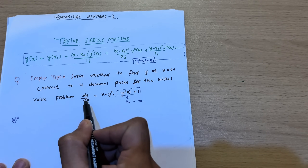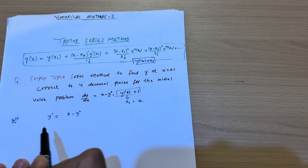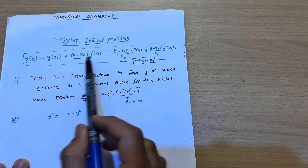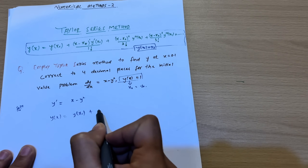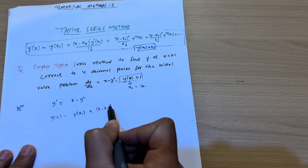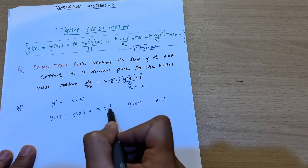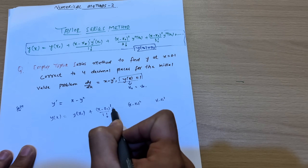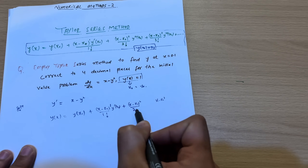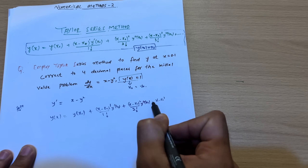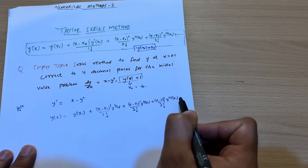In the solution, dy/dx is given — we can also represent it as y'. So y' = x − y². Now, the Taylor series formula is: y(x) = y(x₀) + (x − x₀)/1! · y'(x₀) + (x − x₀)²/2! · y''(x₀) + (x − x₀)³/3! · y'''(x₀) + and so on.